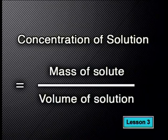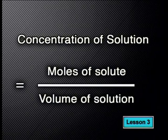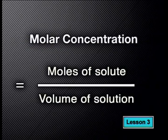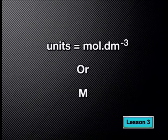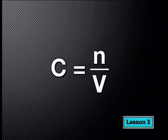Chemists use two ways of expressing concentration. The second one, which includes the number of moles of solute present, is called molar concentration. To calculate molar concentration, we divide the number of moles of solute by the volume of solution. The units for molar concentration are mol·dm⁻³, or M, which stands for molar. We use the equation C equals n divided by V, where n is the number of moles and V is the volume of solution.